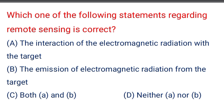Next question: which one of the following statements regarding remote sensing is correct — option A: the interaction of the electromagnetic radiation with the target, option B: the emission of electromagnetic radiation from the target, option C: both A and B, option D: neither A nor B. The correct answer is option C: both A and B.